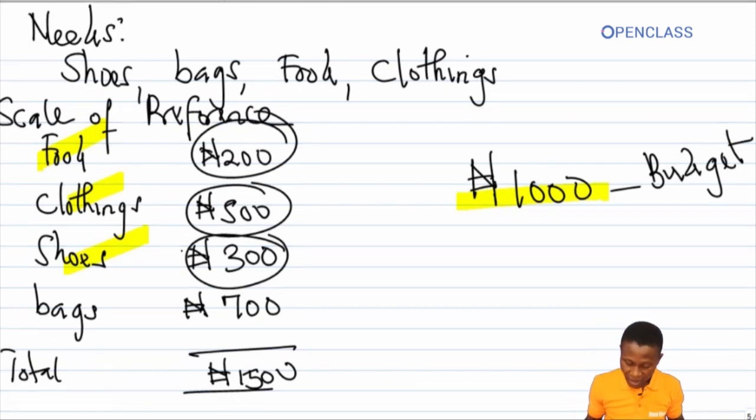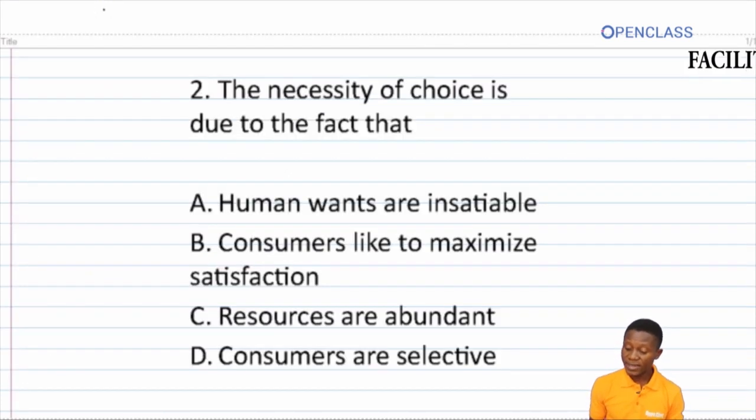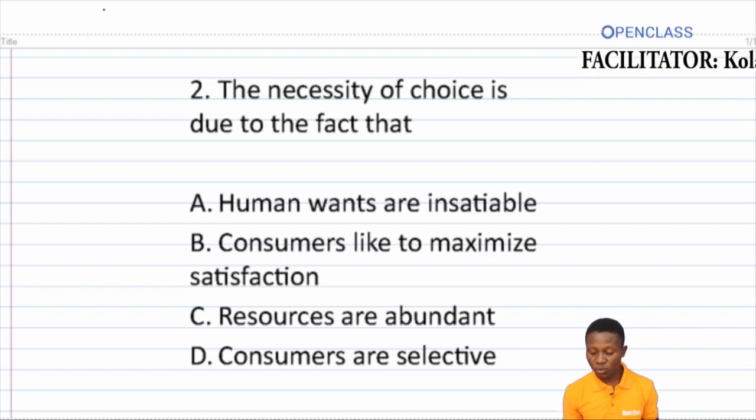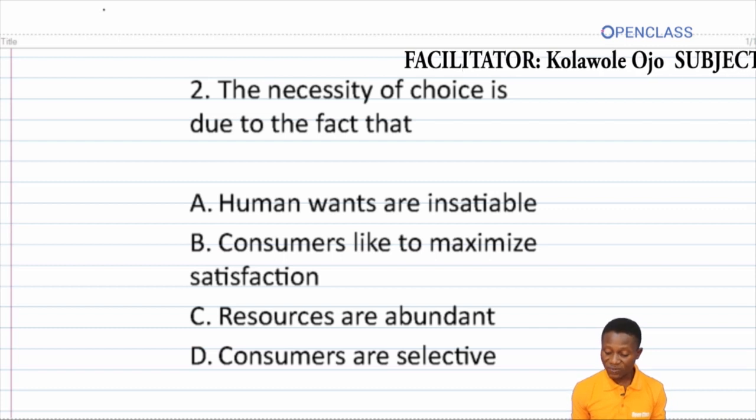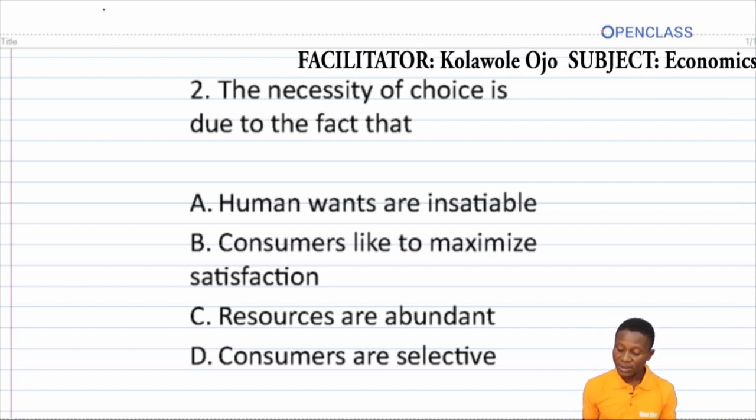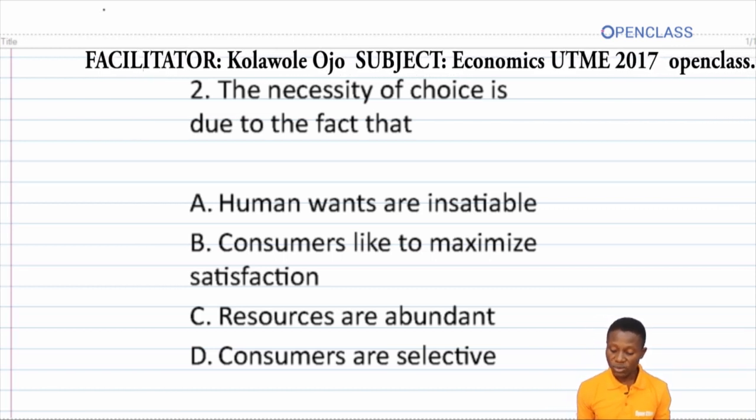Now finally, because I've itemized my needs in the order of importance and decided to go for food, clothing, and shoes, I've actually made a choice. What is choice? When you select one option out of many alternatives, you are said to make a choice. Back to our question, the correct answer is A: human wants are insatiable.